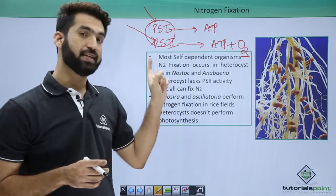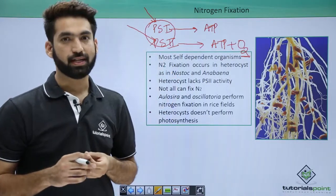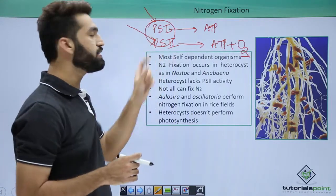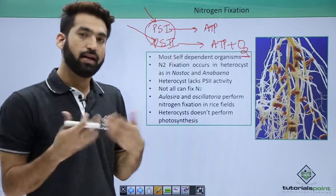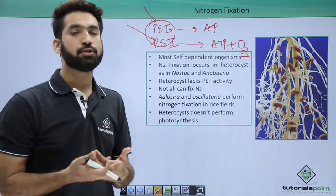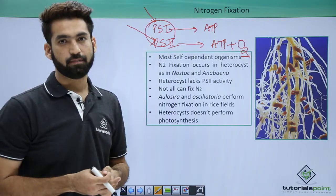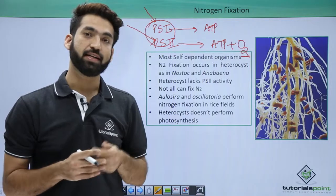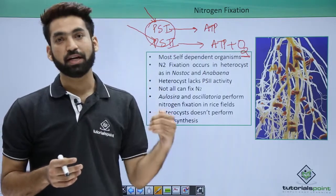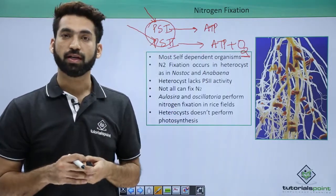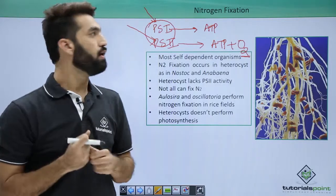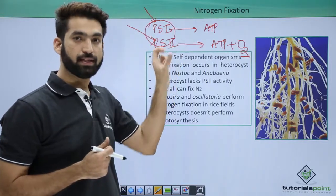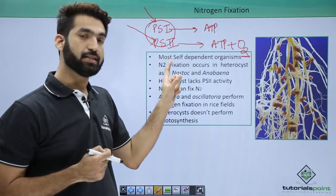When cyanobacteria is doing photosynthesis, that cell is called the vegetative cell. Now if this cell has to do nitrogen fixation — nitrogen fixation is the conversion of atmospheric nitrogen to usable products that a plant can absorb.